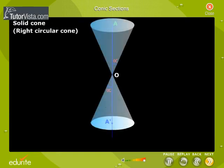Conics are the cross sections of a cone when it is cut by a plane at different angles which are as shown.